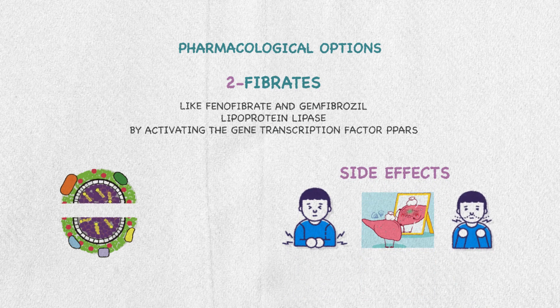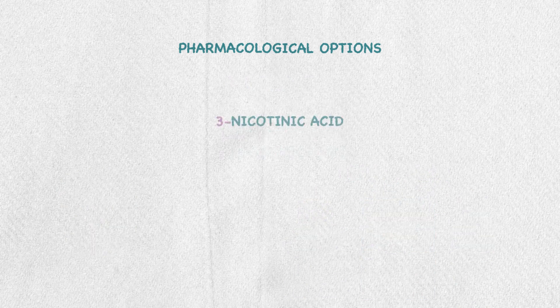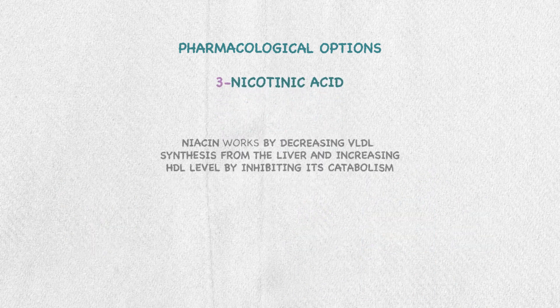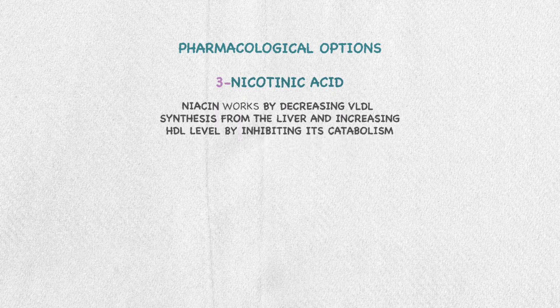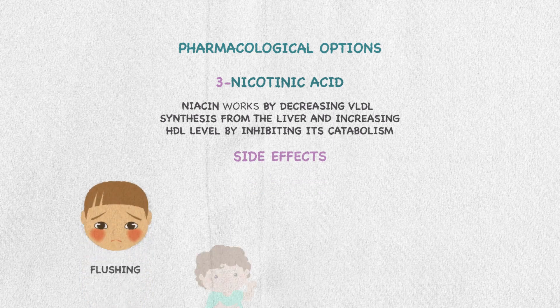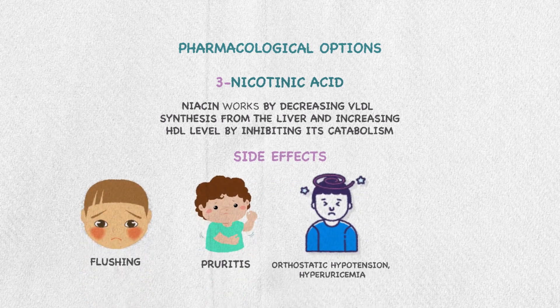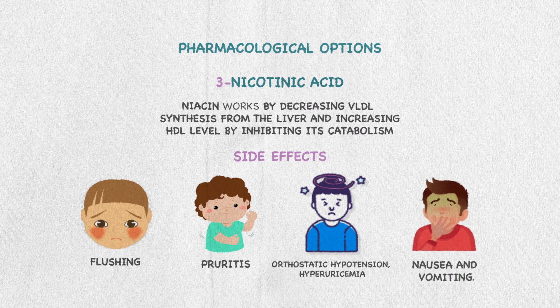The third medication class is nicotinic acid, which includes niacin. It works by decreasing VLDL synthesis from the liver and increasing HDL levels by inhibiting its metabolism. Side effects include flushing, arthritis, orthostatic hypotension, hyperuricemia, and nausea and vomiting.